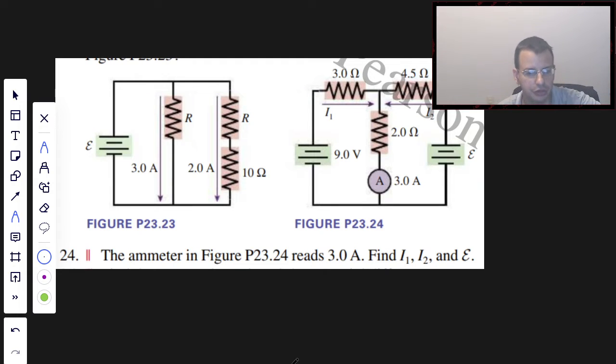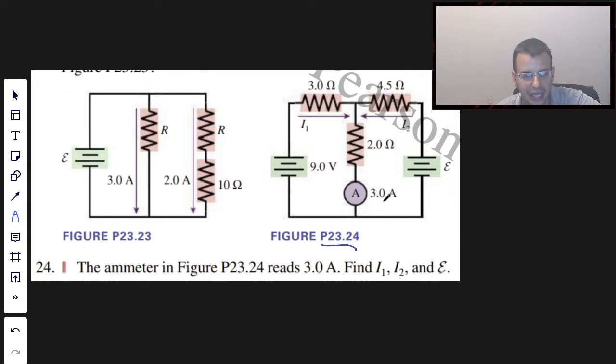The ammeter in figure 23.24, that one, reads 3 amps. Find I1, I2, and epsilon.